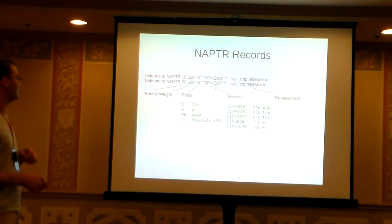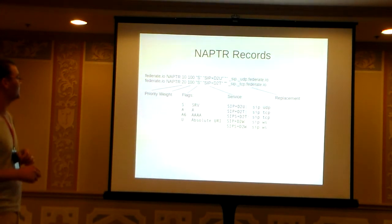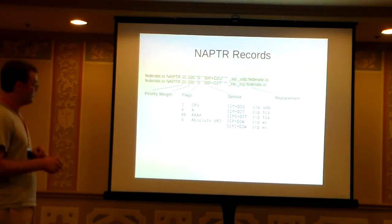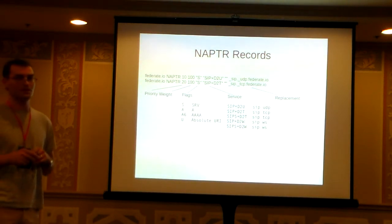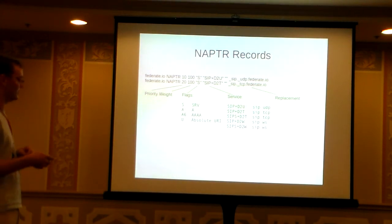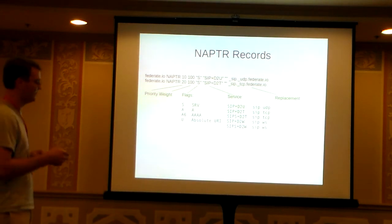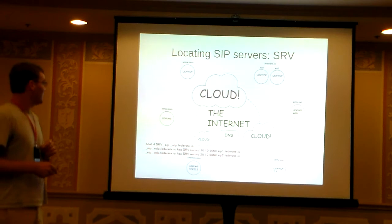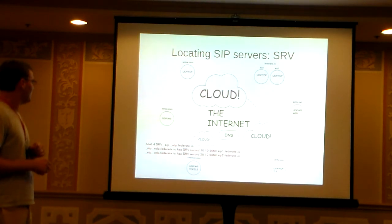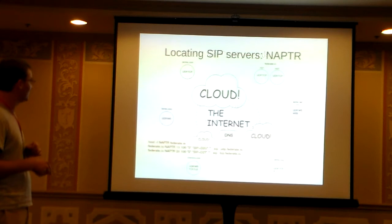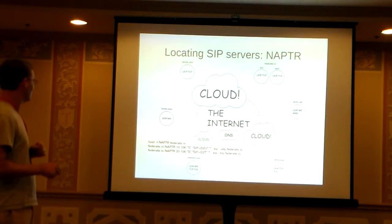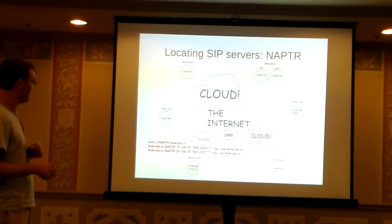After the NAPTR record lookup, it goes into an SRV record lookup. We've got SRVs for UDP and TCP because that's what federate.io supports. However, borax.com only does UDP and WebSocket, so it's only going to follow the UDP SRV. It does the SRV lookup on that and it returns two records — one for sip1.federate.io and sip2.federate.io — with different priorities. In this case it takes the first one because it has lower priority.